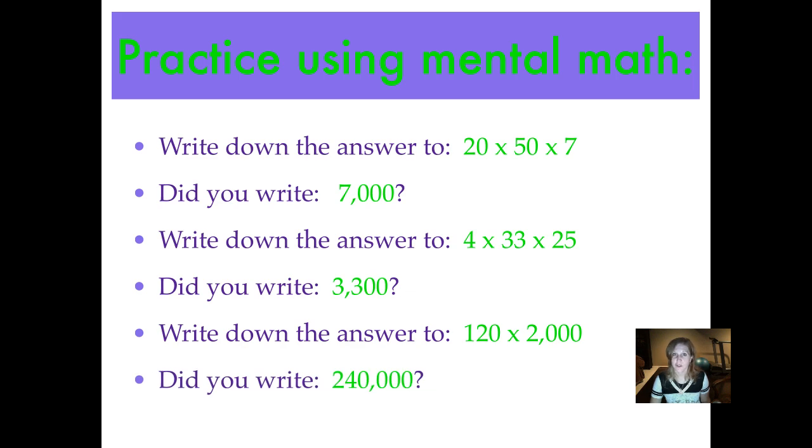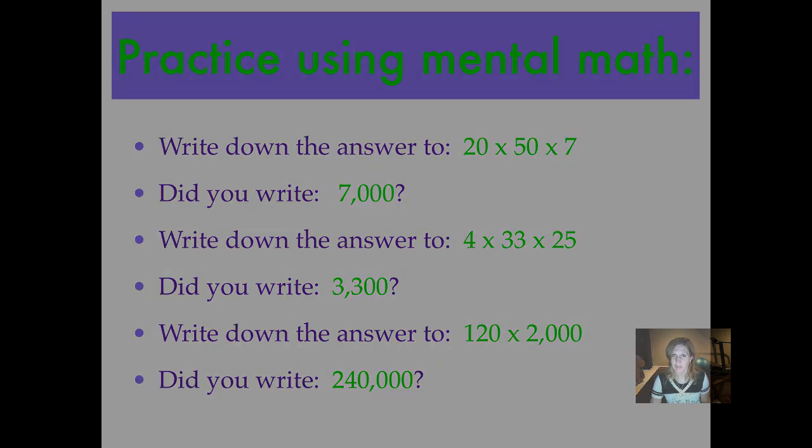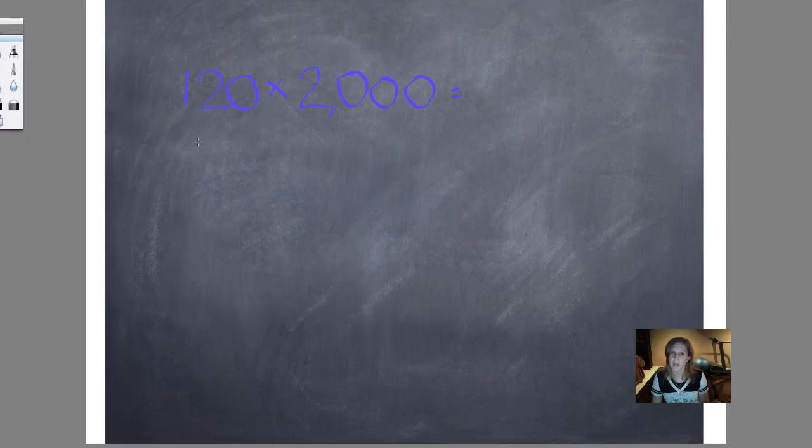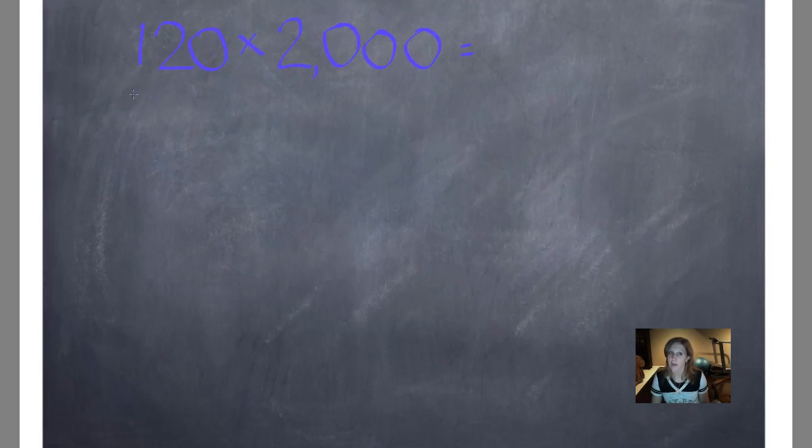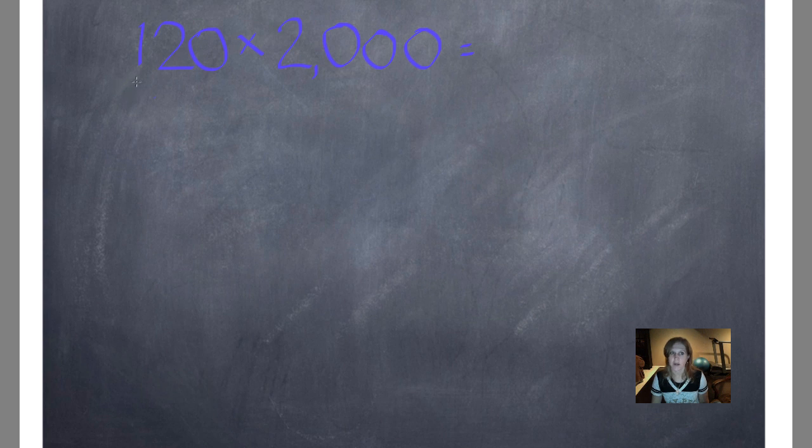Did you write 240,000? Let's see how we got that one. 120 times 2,000. This isn't too bad. There's only two factors there. So I'll use my mental math strategies and underline my non-zero digits. 12 times 2 is 24. Then I'll count the zeros on both factors. 1, 2, 3, 4. 1, 2, 3, 4. 240,000.